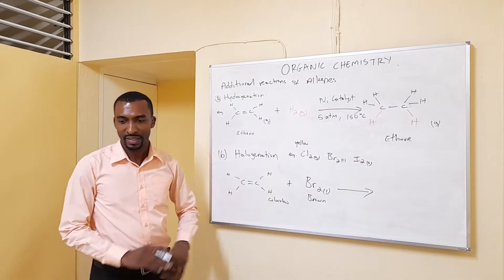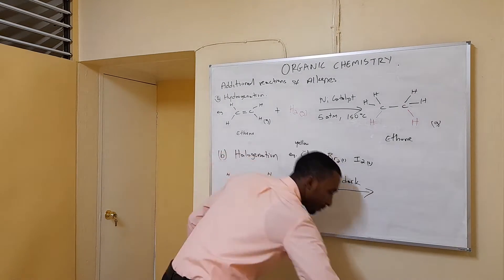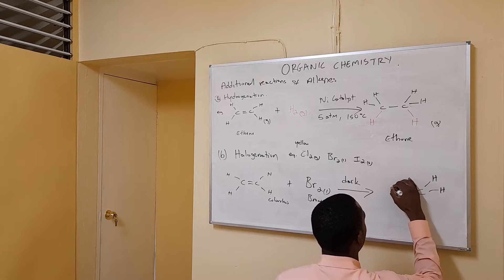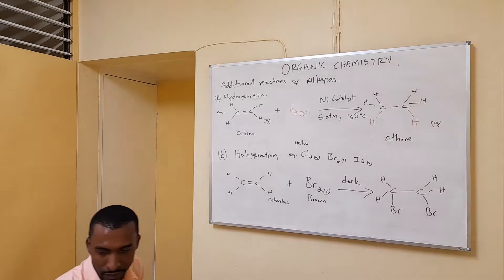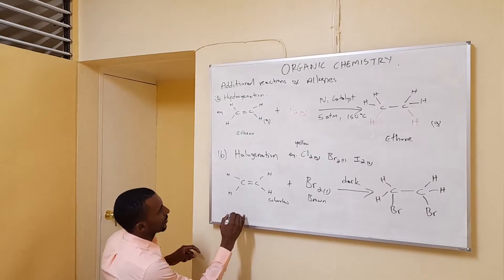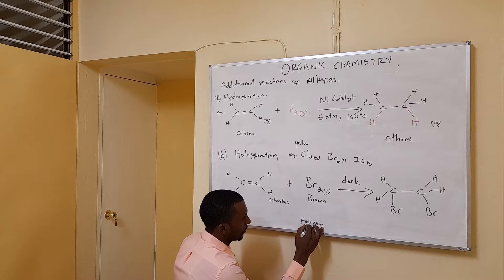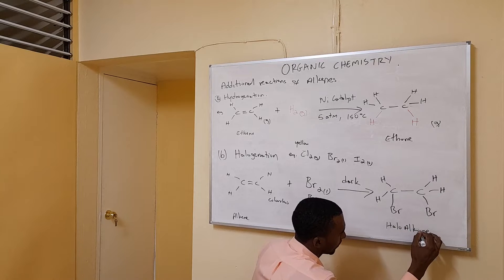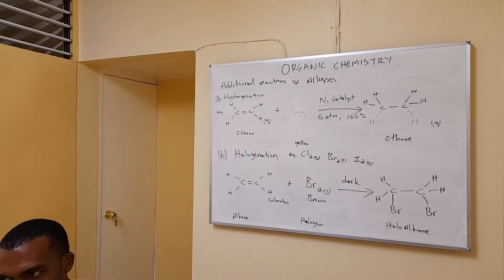If we mix these two reagents in the dark, so we don't need light in this case, we're going to produce C2H4Br2. This is alkyl halogen, and we produce the halo alkane. Haloalkenes - as long as we have a halogen atom mixed with alkane, substitute one of the hydrogen, it's called haloalkenes.